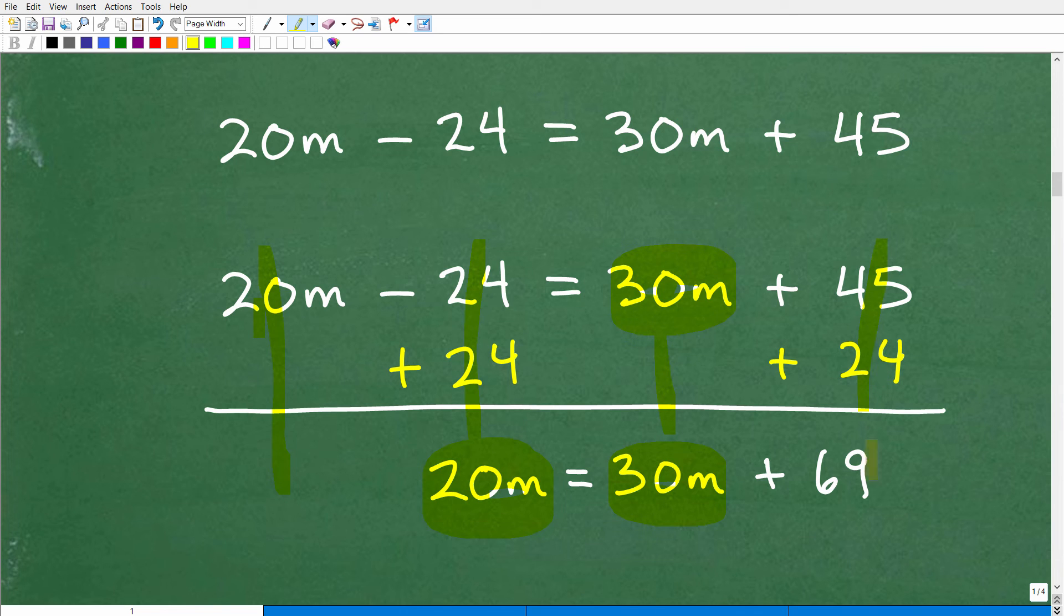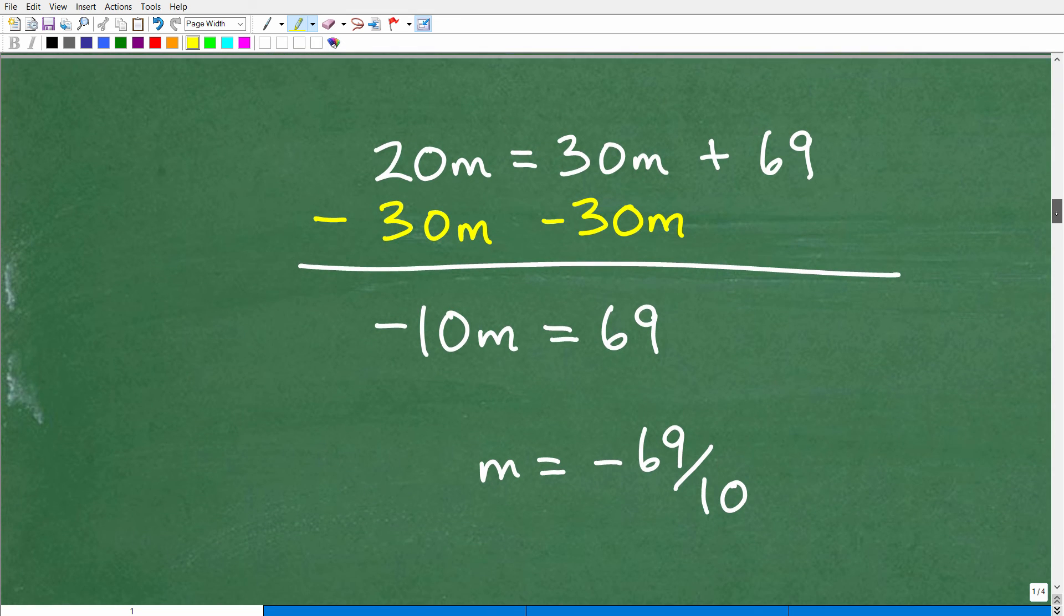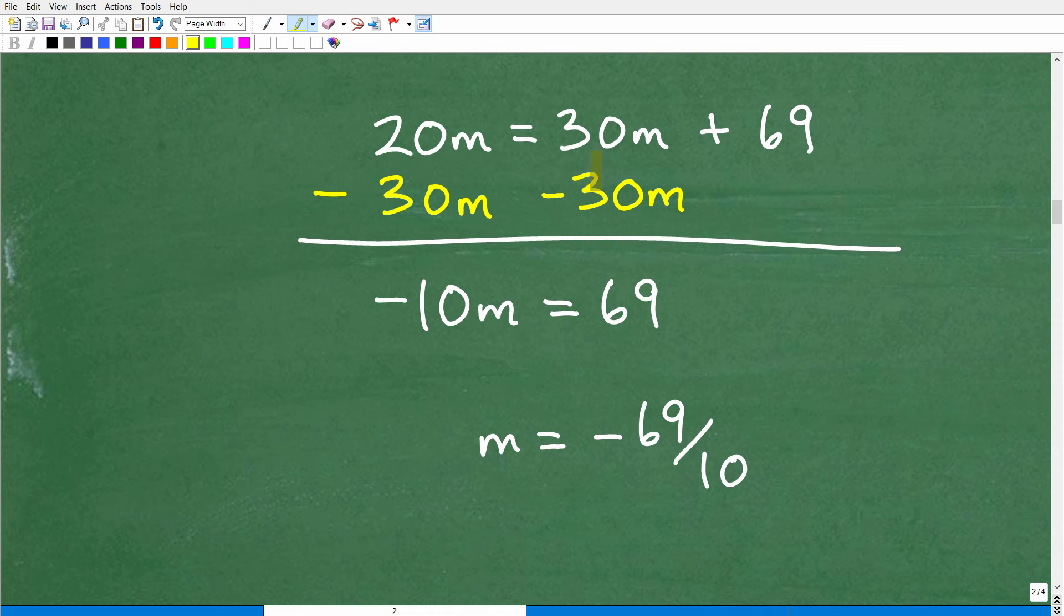Okay, so now, let's go ahead and continue on. And, here, we'll go ahead and move this variable term to the left-hand side. So, we'll subtract 30M from both sides of the equation. And, of course, we're going to add down in a column manner. So, 20M minus 30M is negative 10M. And then, 30M minus 30M is 0. And, 69 plus 0 is 69. And, now, finally, to solve for M, we simply divide both sides of the equation by negative 10. And, we get 69 over negative 10, which is negative 69 over 10.